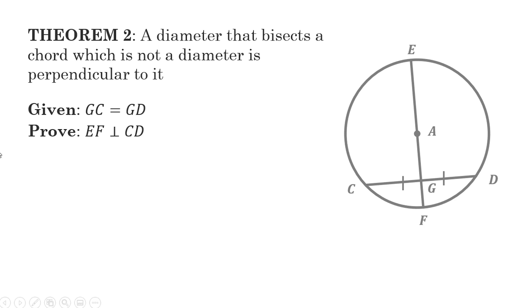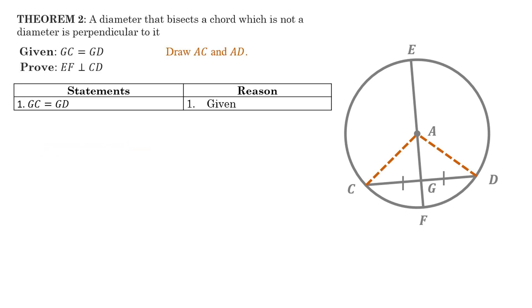Now, let's have the formal proof. But let's begin with drawing AC and AD because we want to prove that the two triangles are congruent. The first statement, GC is equal to GD. That's given. AC is equal to AD because all radii of the same circle are equal. And AG is equal to AG by reflexive property. AG is equal to itself. And CA and AD are congruent to each other. So therefore, by SSS congruence, we have triangle CAG is congruent to triangle DAG.